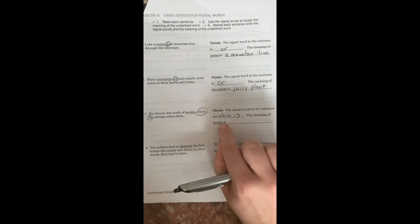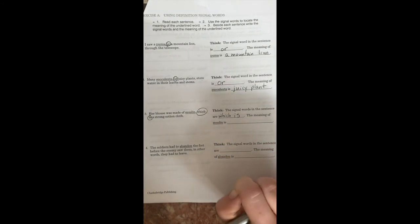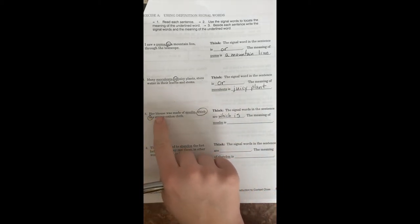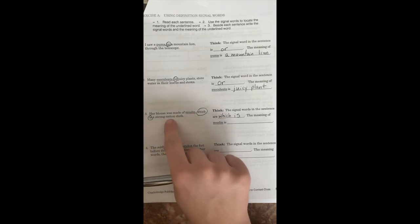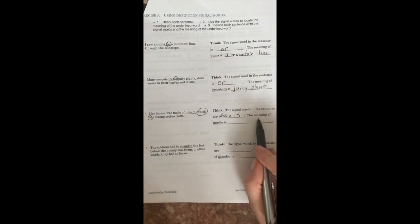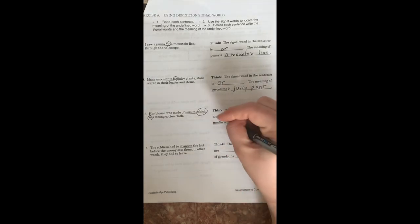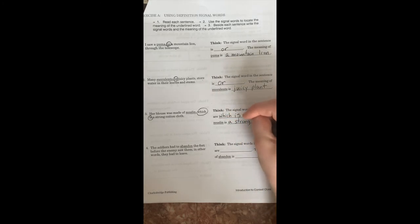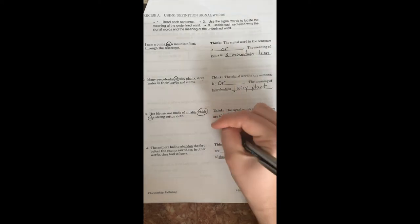The meaning of muslin is. All right, let's read the sentence again to see if we can figure out the meaning. Her blouse was made of muslin, which is a strong cotton cloth. Oh, perfect. Our context clues are that muslin is a strong cotton cloth. So I can say that the meaning of muslin is a strong cotton cloth.